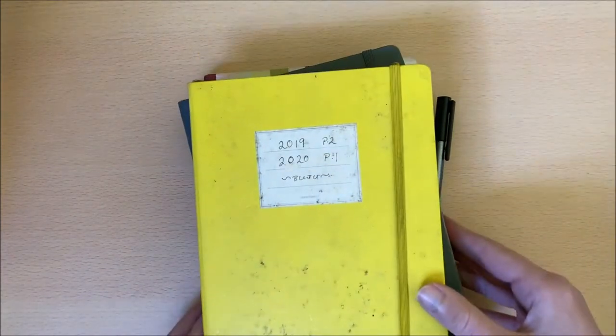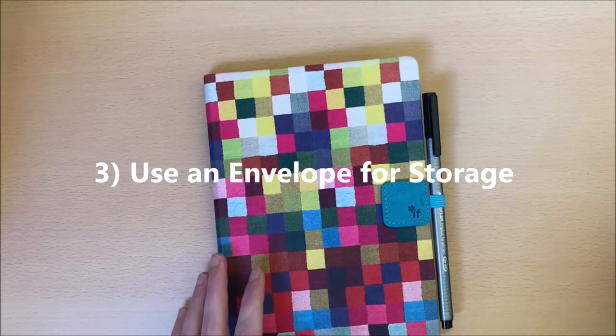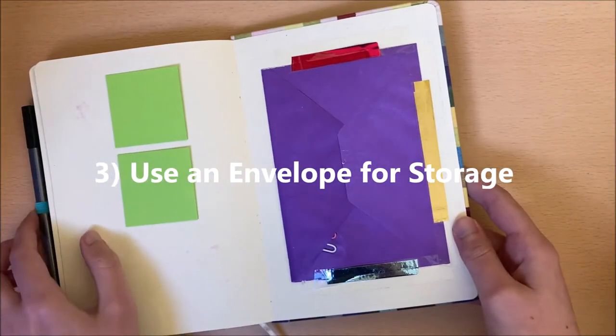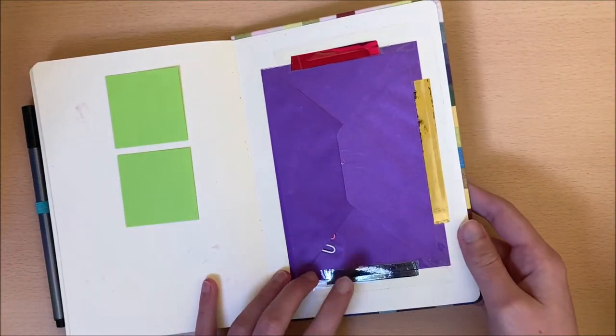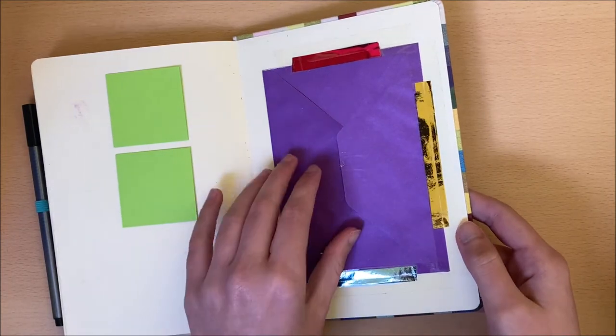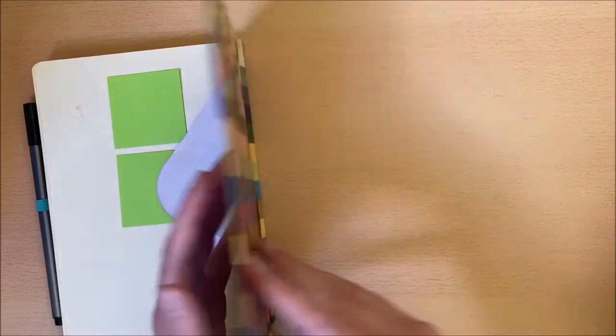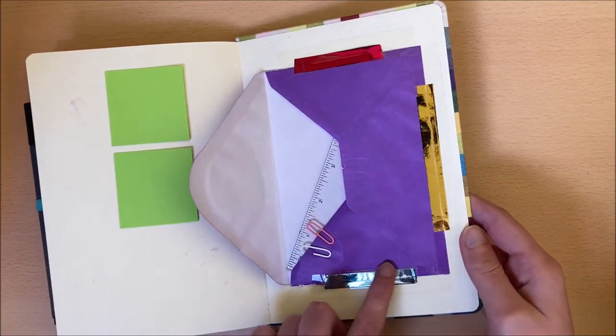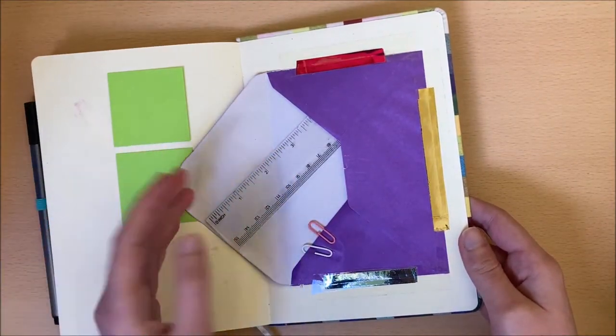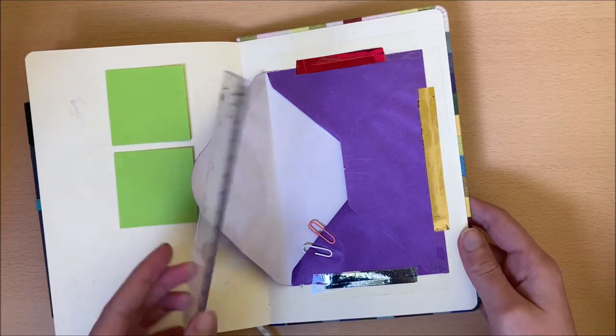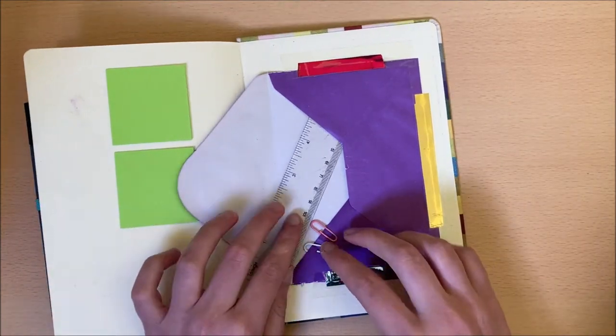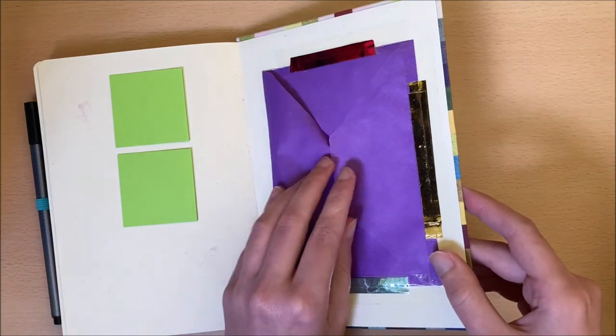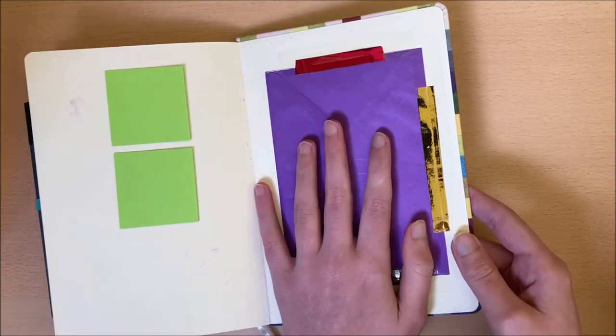So tip number three is to use an envelope at the back for storage. Guys, this was a life changer when I figured out how to do this. This is my current bullet journal, and the envelope is on the back page. I've just stuck it in with washi tape, and you can hold anything in this. You can hold sticky notes, I have a small ruler, you can hold safety pins, small notes, anything that you want, and it's easy to just close it and keep it secure, and you know nothing will fall out.